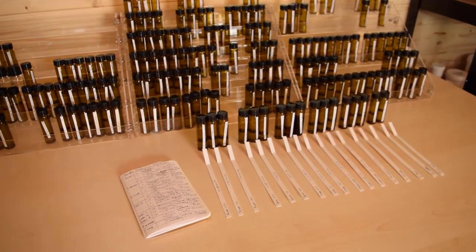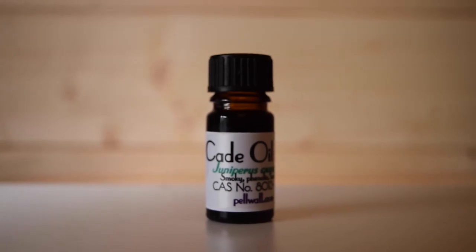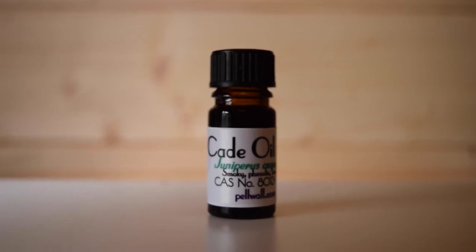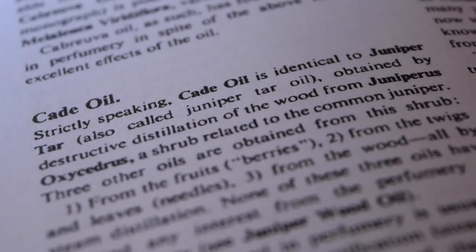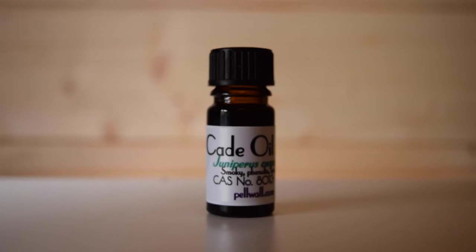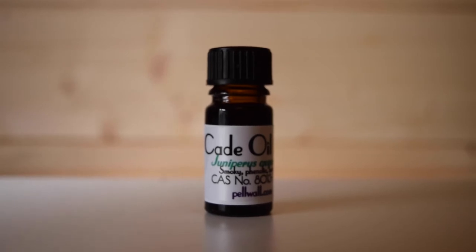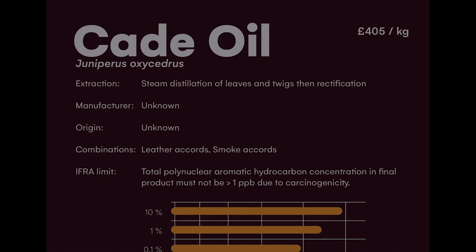The second oil that I looked at was cade oil. As I said before, this is produced by distillation of the wood, and then the tar that's produced from that is then re-distilled, and that is what's called rectification. The reason we would use rectified cade oil in perfumery is because this gets rid of most of the carcinogens that are found in the un-rectified cade oil, so that is banned for use. And then there is also an IFRA limit on how much of the rectified oil you can use, just because there's some concern that there could be some trace amounts of carcinogens left over from that rectification process.